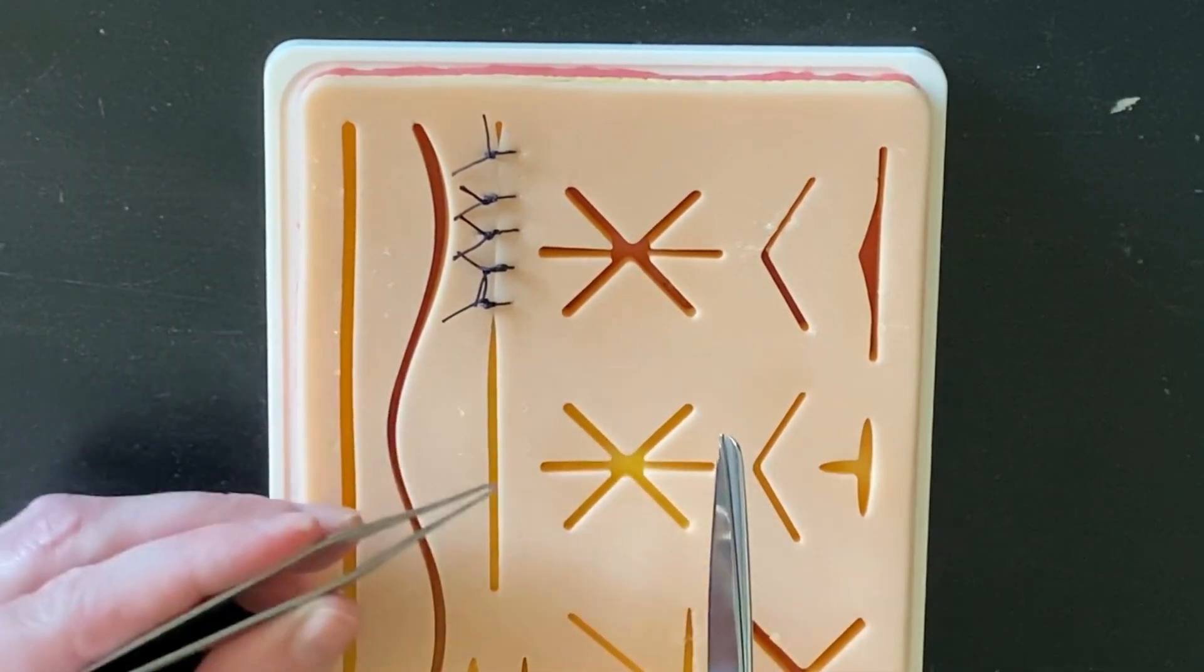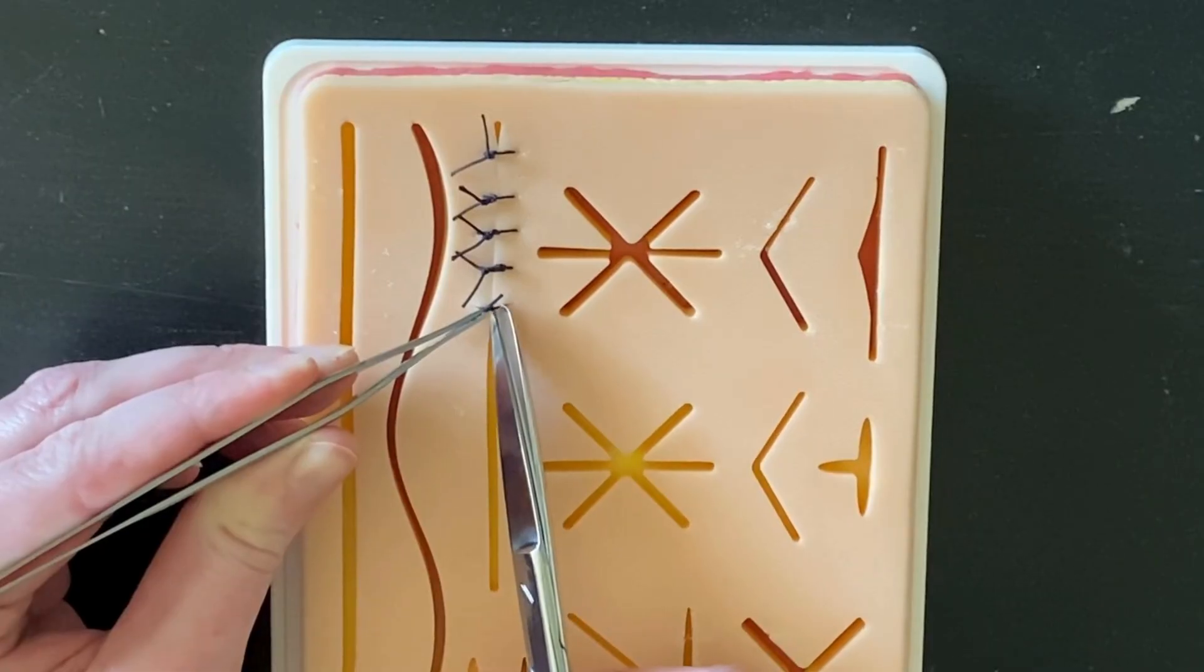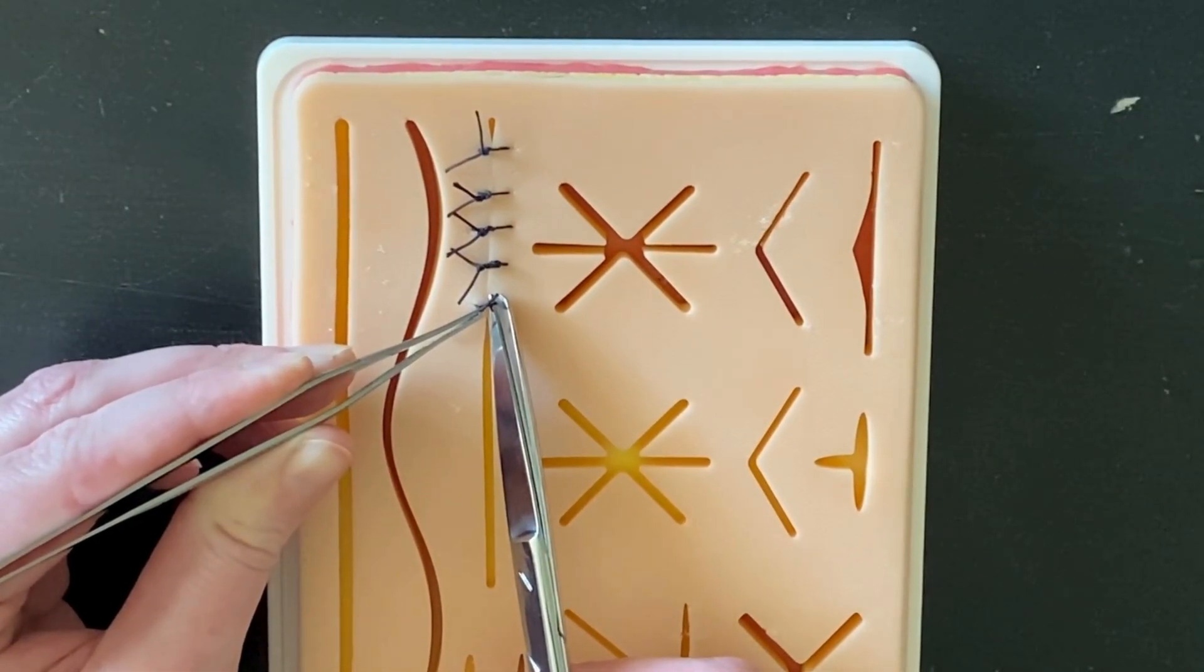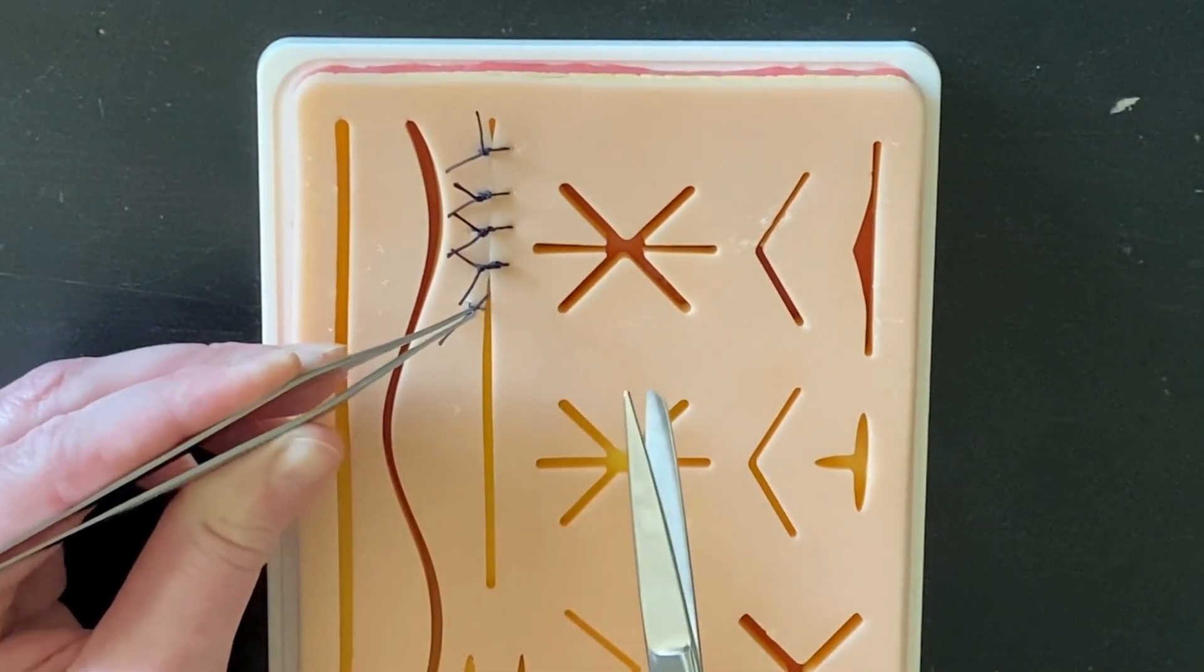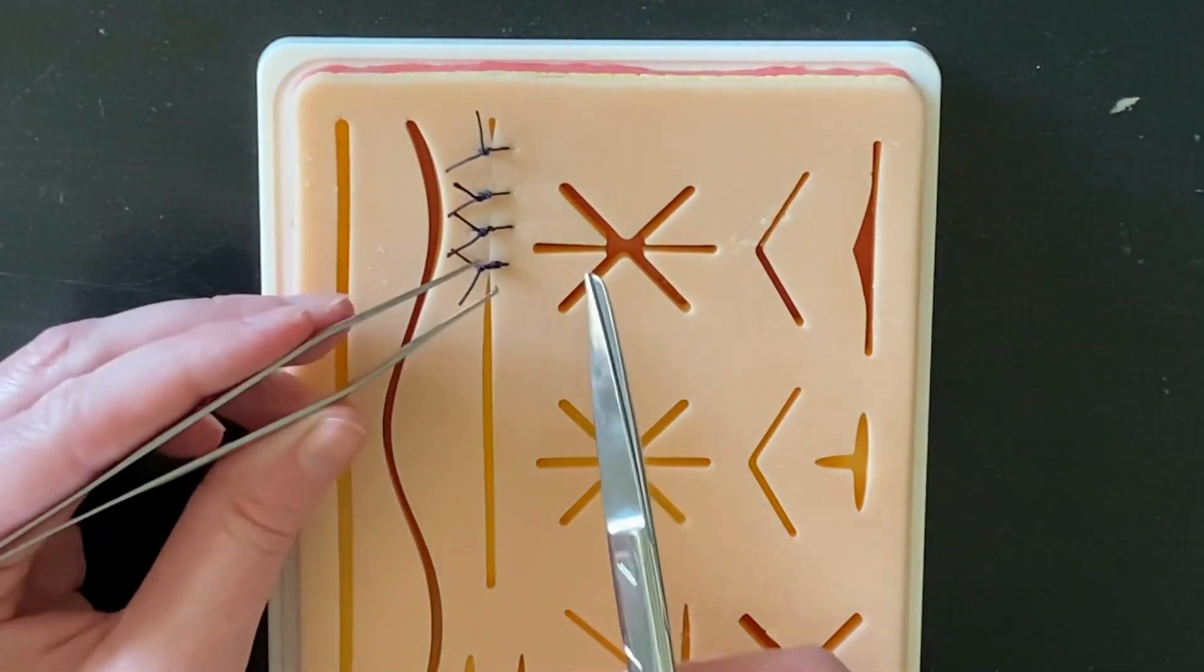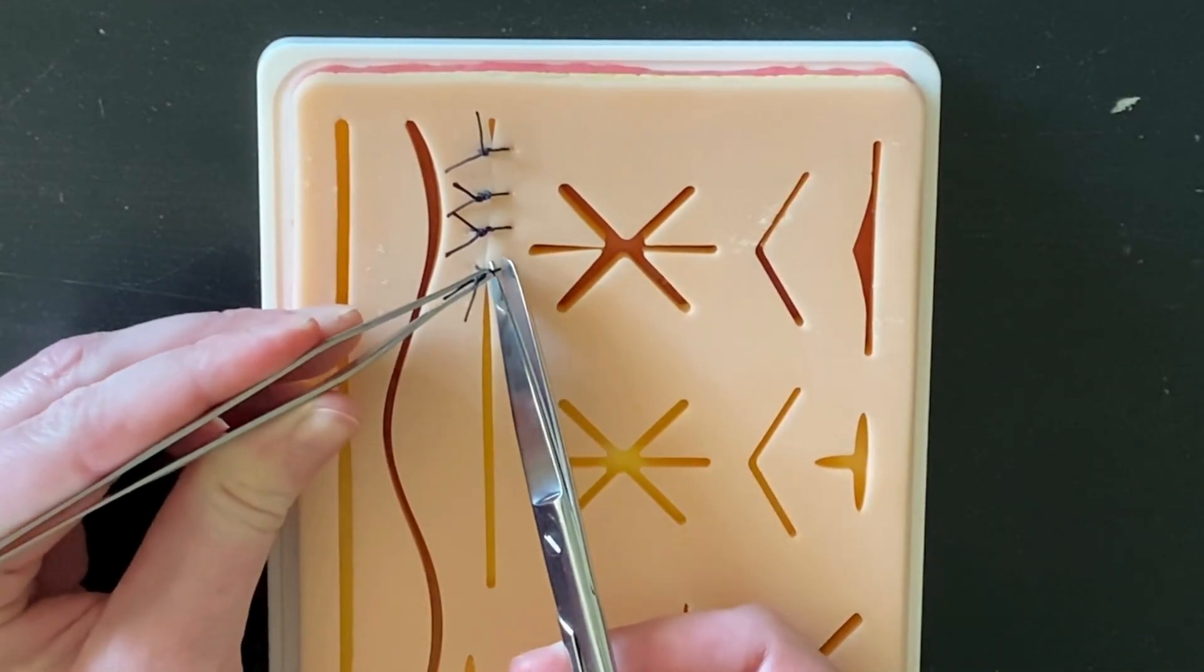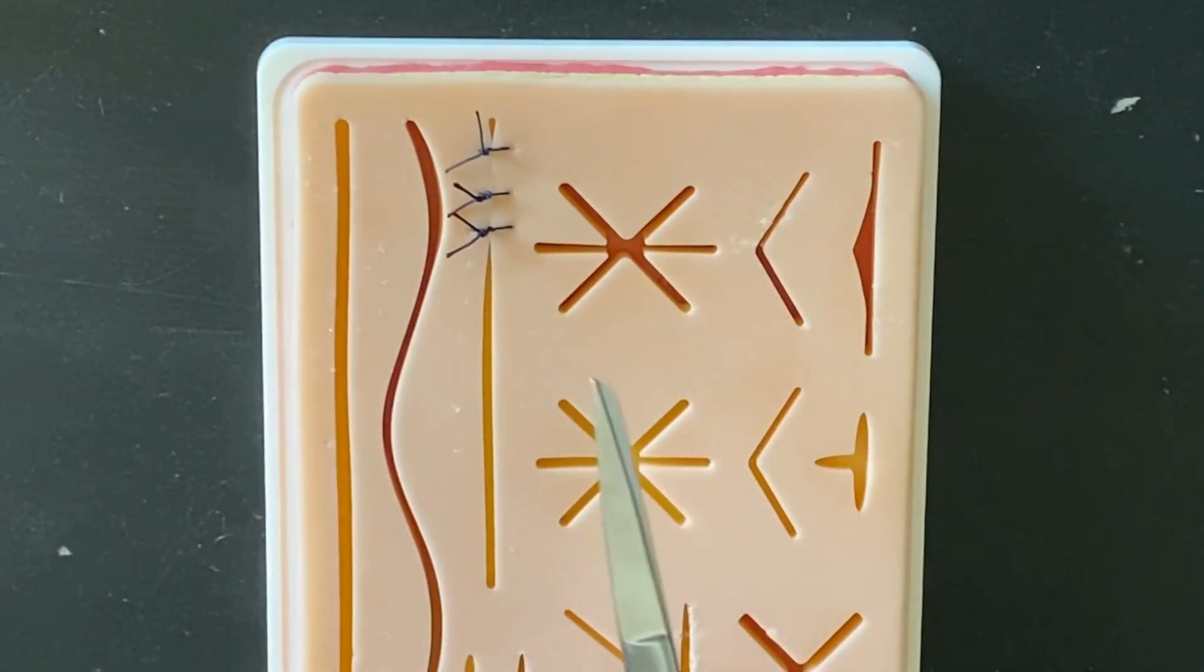Sometimes you'll find that the sutures are going to be buried. That's when it's important to give that tension so you can sneak that tine underneath. The iris scissors or curved iris scissors may have a finer tine that will give you a bit more fine motion to get underneath that knot as well.